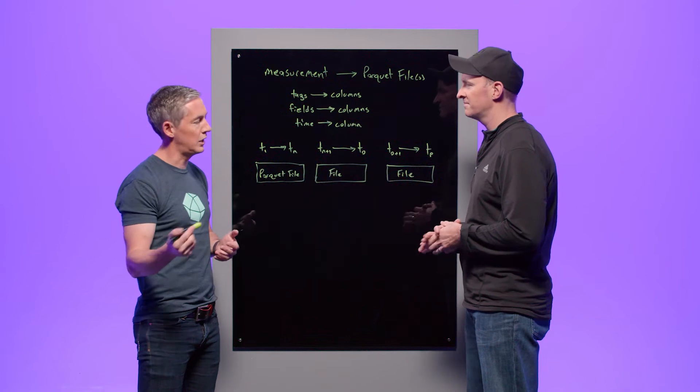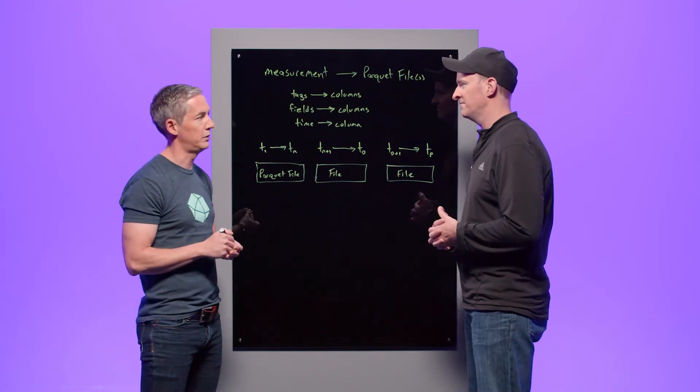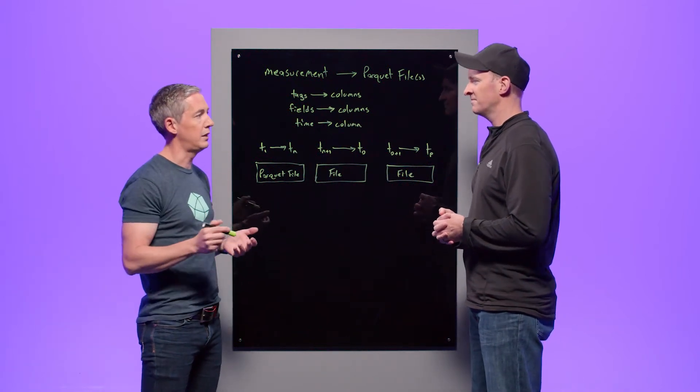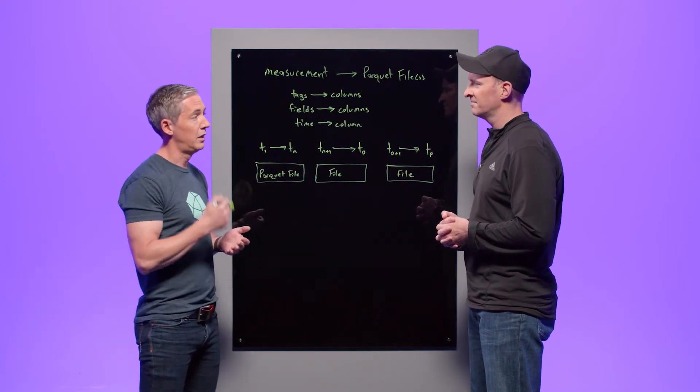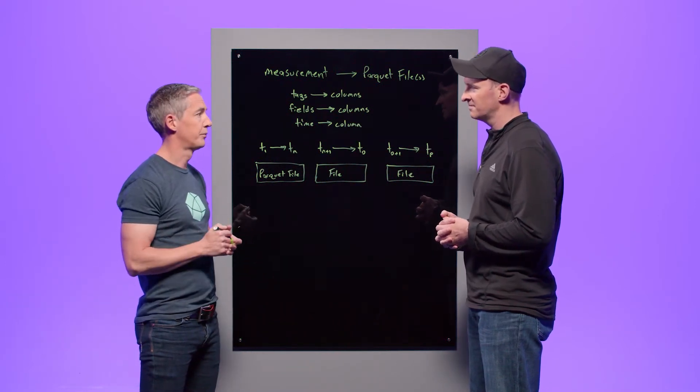So for example, dictionary and RLE encoding are supported. It has support for a wide variety of data types, so numerical data, textual data, and structured data like JSON. It's also built around nested data structures using the record shredding and assembly algorithm first described in the Dremel paper that came out of Google.